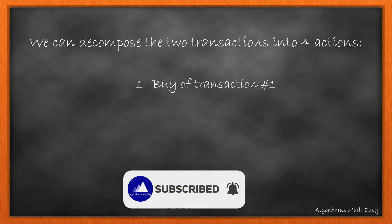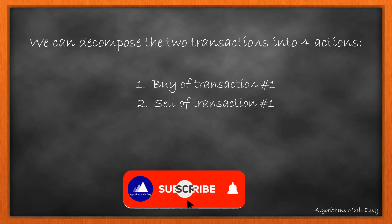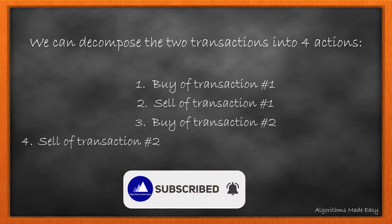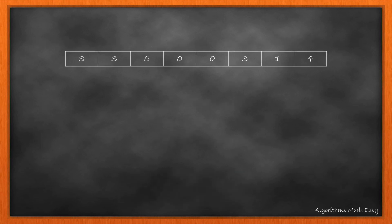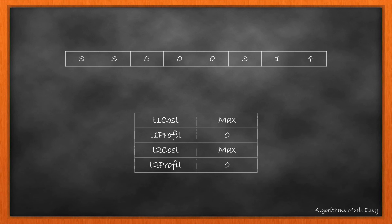The buy of transaction 1, sell of transaction 1, buy of transaction 2 and sell of transaction 2. Let's see how we solve it. We will take four variables and initialize cost variables with the max value and the profits with zero.